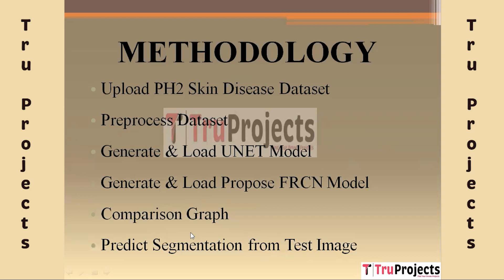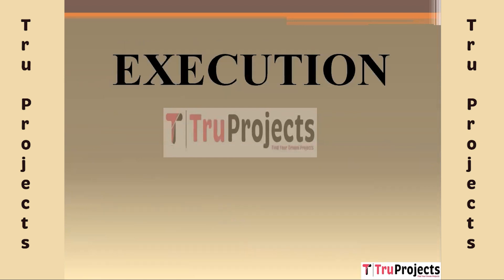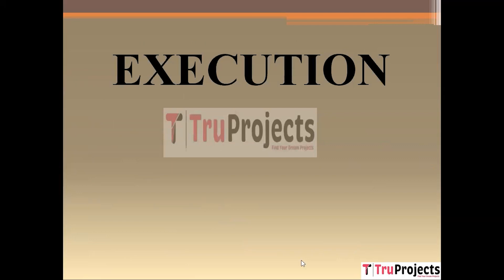The next module is Comparison Graph. Using this module we will display a graph comparing the performance of UNet and FRCN on the PH2 and ISIC datasets using evaluation metrics such as accuracy. The last module is Predict Segmentation for Test Image, where we will perform skin lesion segmentation on a test image using both UNet and FRCN models and visualize the segmented outputs for comparison.